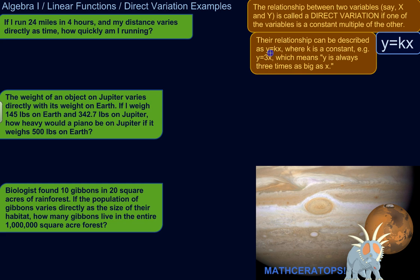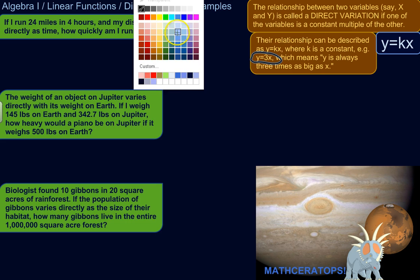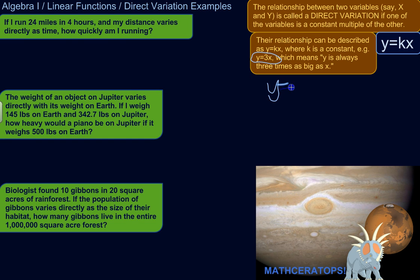So for example, y equals three times x. That means y is always three times as big as x. So we would say y varies directly as x.